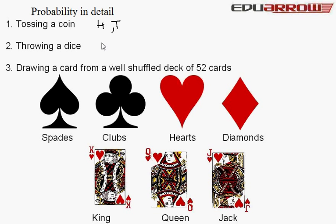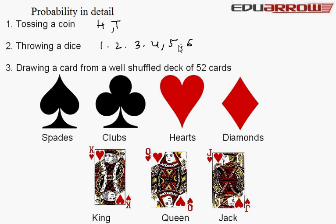If we throw a dice, there are six conditions: 1, 2, 3, 4, 5, 6. So there are 6 conditions total.